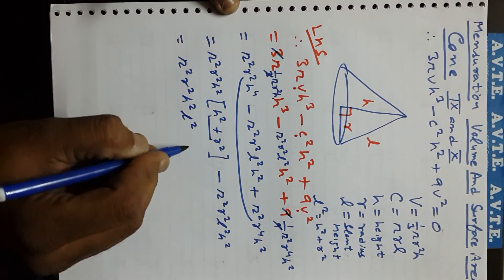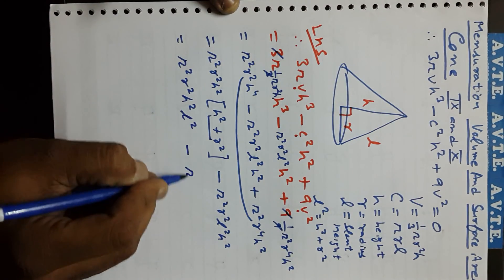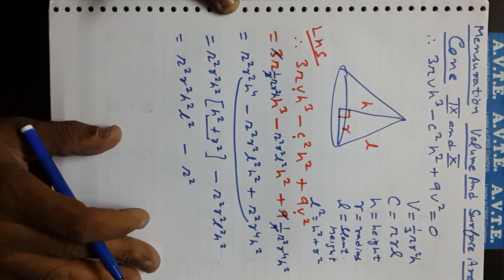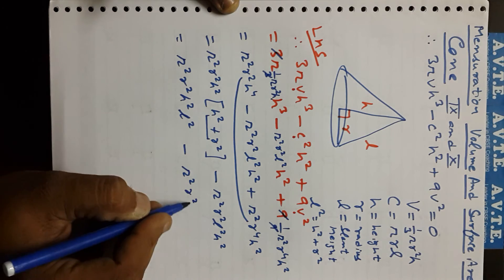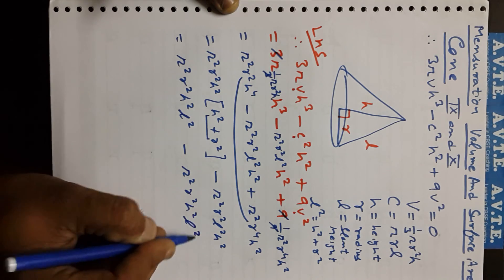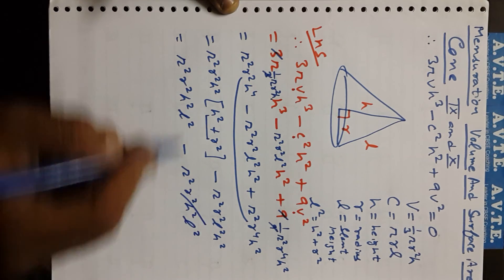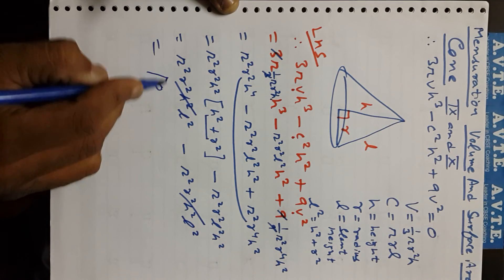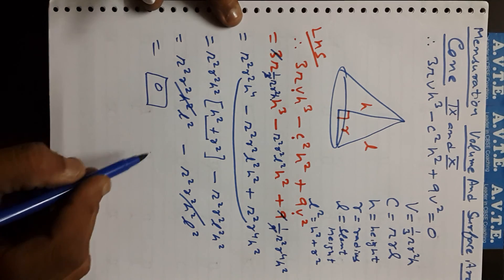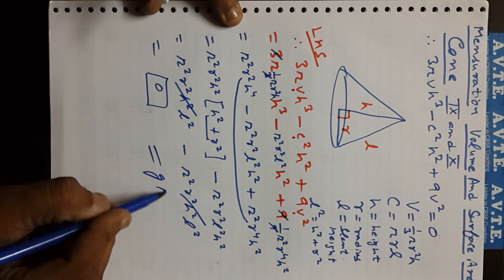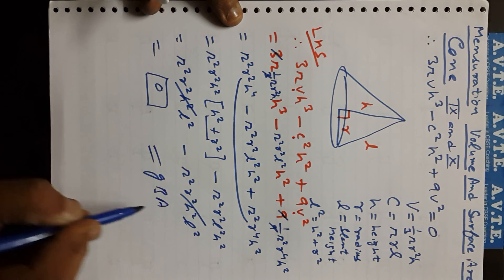In the next step we write π²r²h²·l² minus π²r²h²·l². These two terms cancel each other out, and the answer is zero — hence proved. This is a very simple question for class 10, but a new one for class 9. I hope you understand. God bless you all.